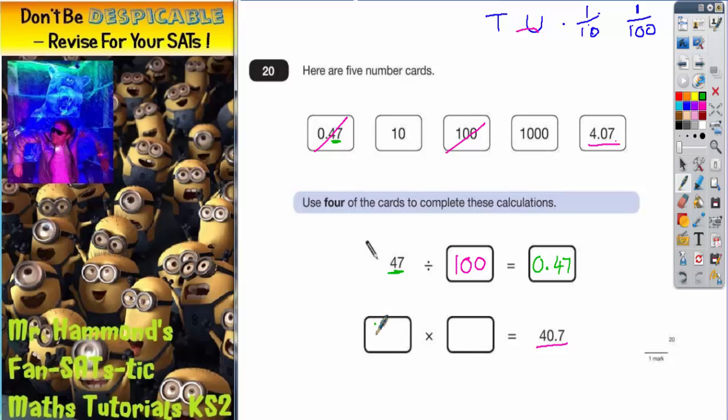4.07. And again, I've got to decide what I'm multiplying by. If I cross off 4.07, I'm either going to multiply by 10 or I'm going to multiply by 1,000.